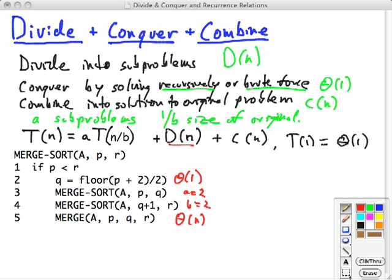We can write this recurrence relation for merge sort like this. The base case is theta of 1, if n is less than 2. Otherwise it's 2 times T(n/2), because a is 2 and b is 2, plus the time to divide and conquer. But theta of n plus theta of 1 is really theta of n as the dominating term.